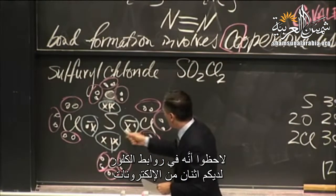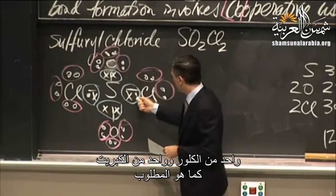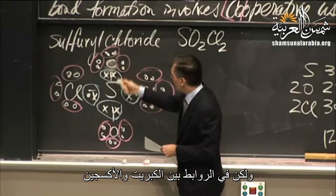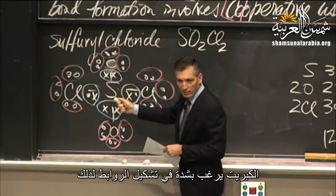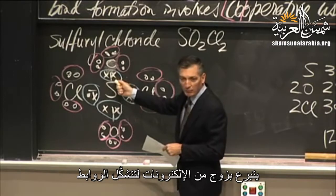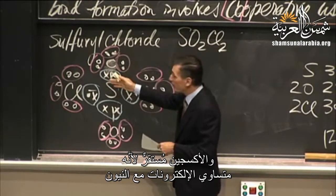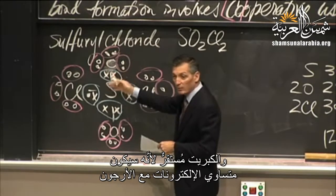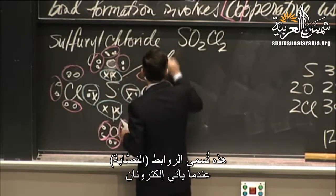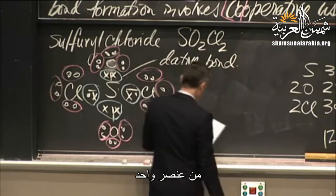Notice that in the bonds to chlorine, one electron comes from chlorine and one from sulfur. But in the bonds between sulfur and oxygen, sulfur is so desperate to form a bond that it donates both electrons — giving oxygen isoelectronic equivalence with neon, and sulfur with argon. This is called a dative bond: a dative bond occurs when both electrons come from one element.